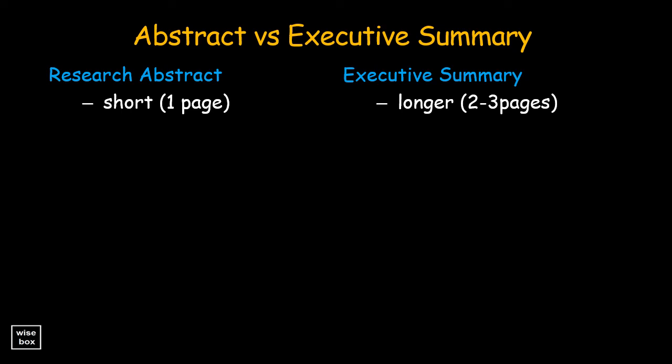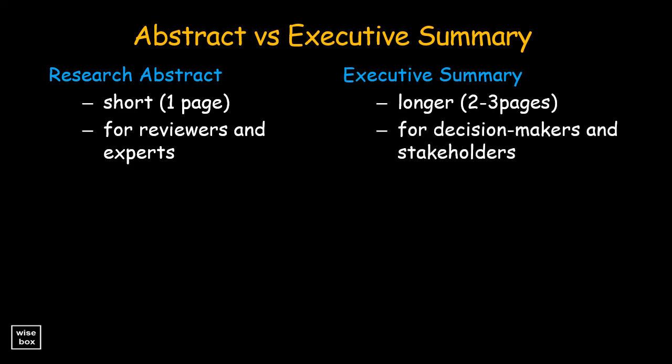An abstract is written for reviewers who are experts in the field, while an executive summary is written for decision makers and stakeholders.